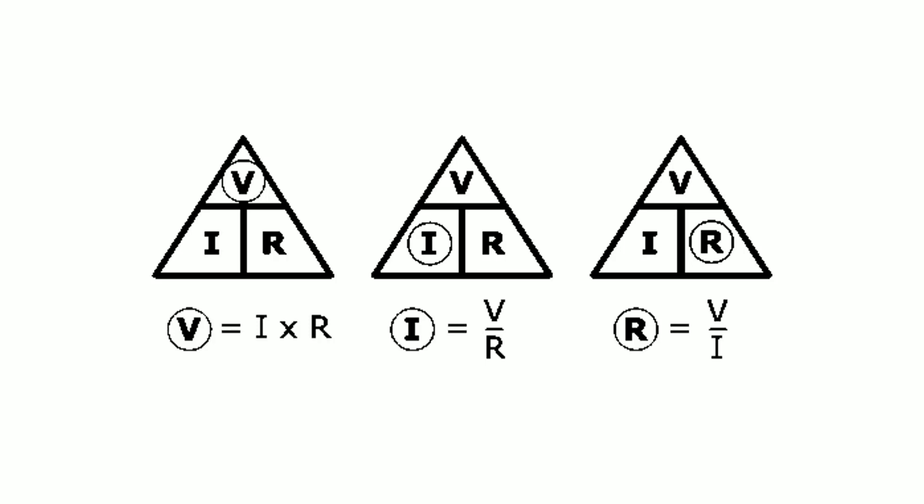Then by using Ohm's law, we can see that a voltage of one volt applied to a resistor of one ohm will cause a current of one ampere to flow, and the greater the resistance value, the less current that will flow for a given applied voltage.